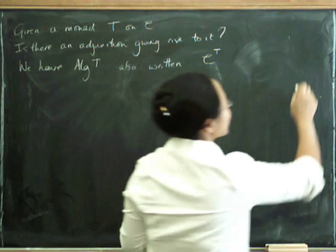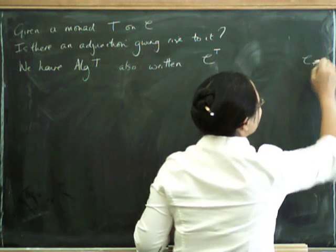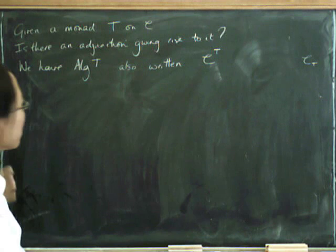The reason we're going to do that is that, secretly later, for the Kleisli category, we might write it with the T at the bottom to show it's somehow the dual of this thing.